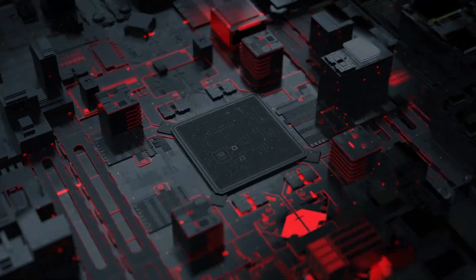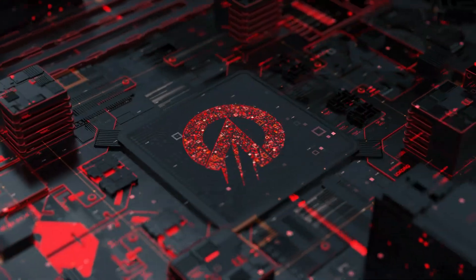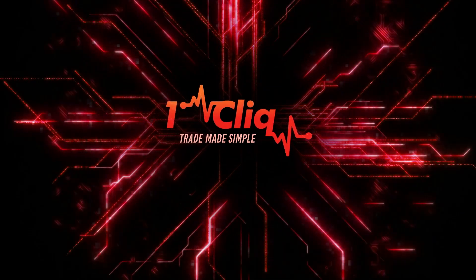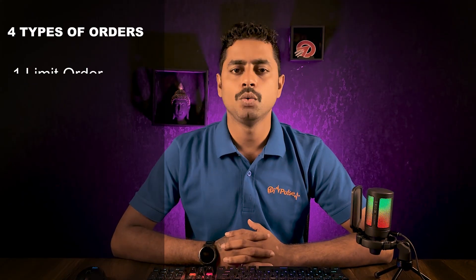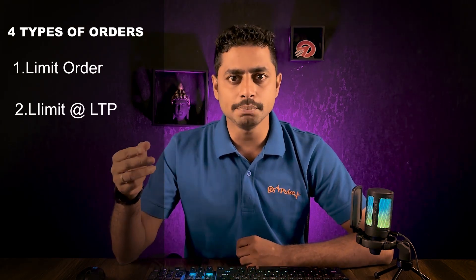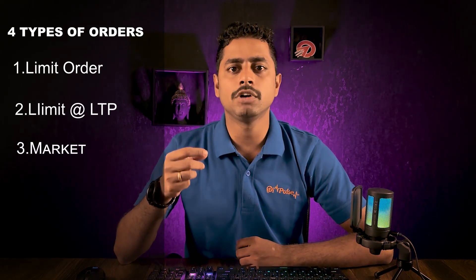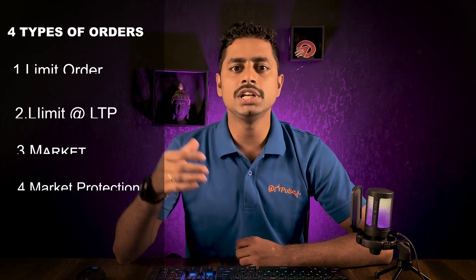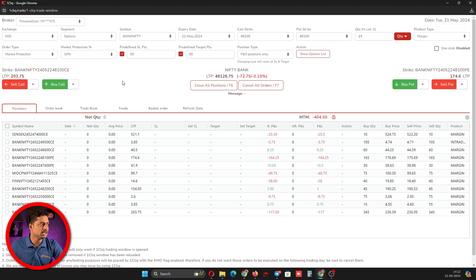In our last video we saw how to use the save and load function in One Click. In this video we'll see what all the order types are and how they work. In One Click we have four different order types: limit order, limit at LTP, market order, and market protection order. Now we'll see them one by one.